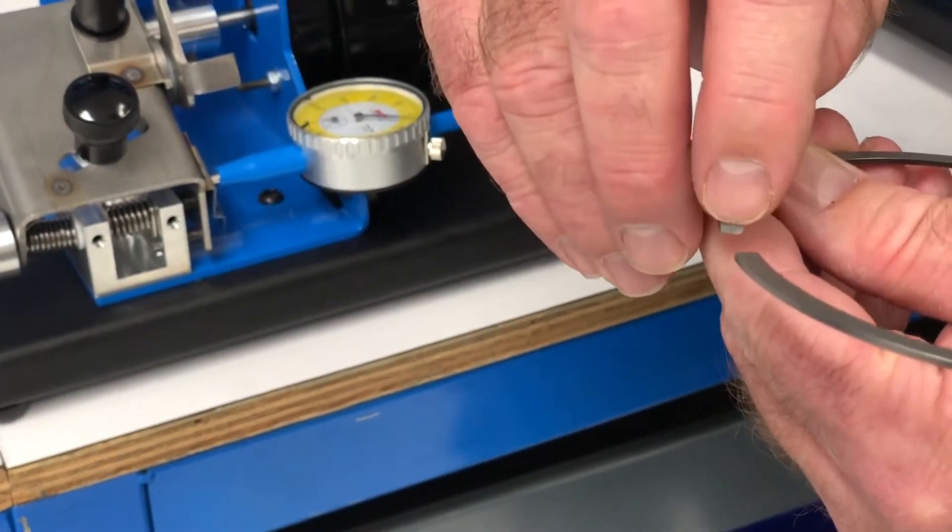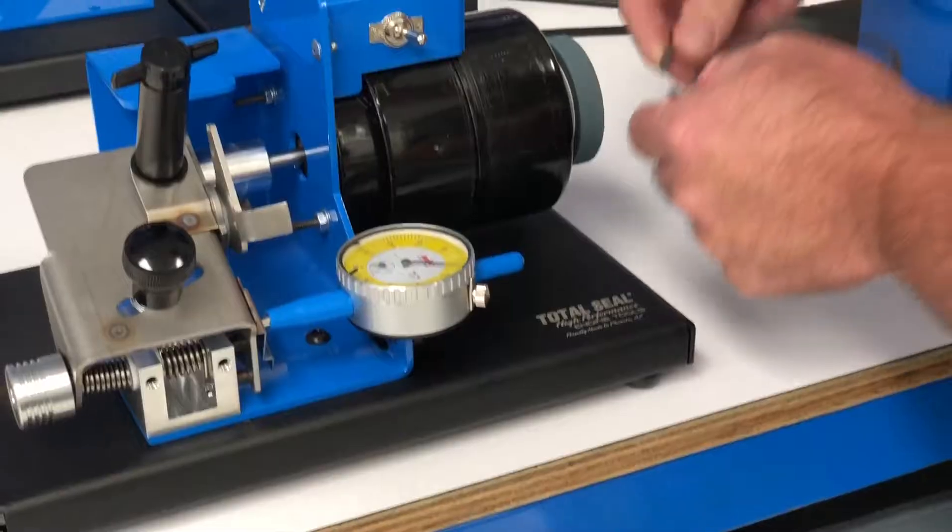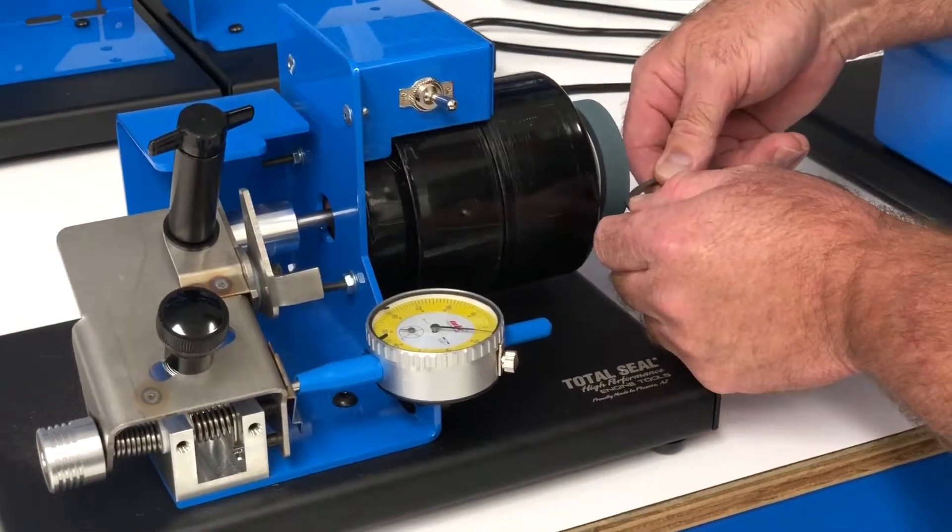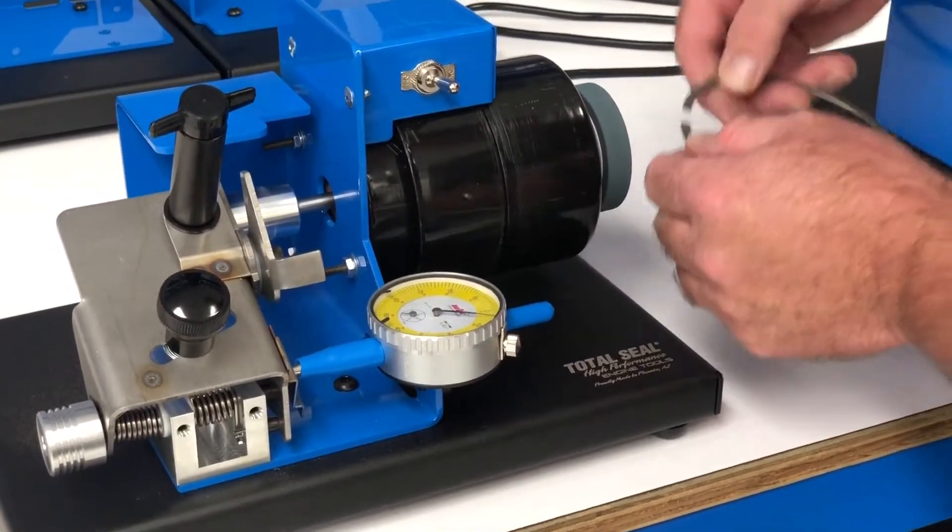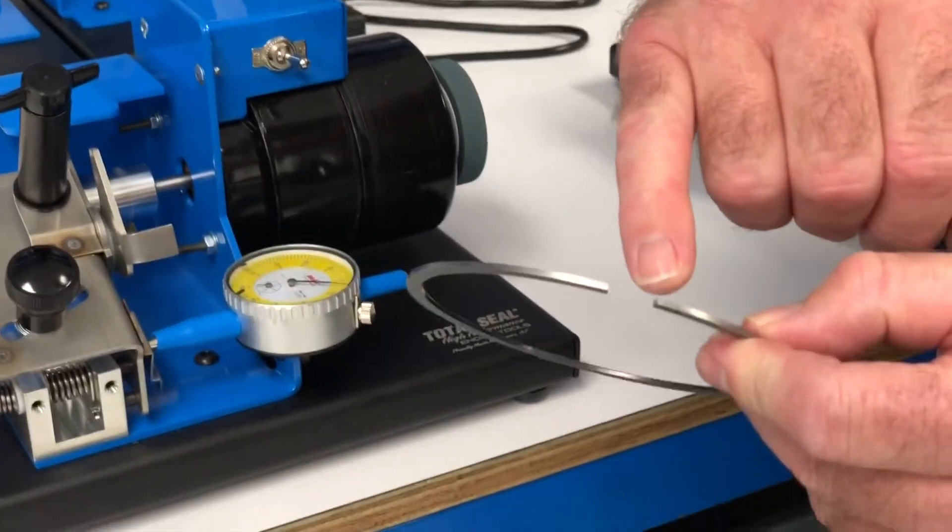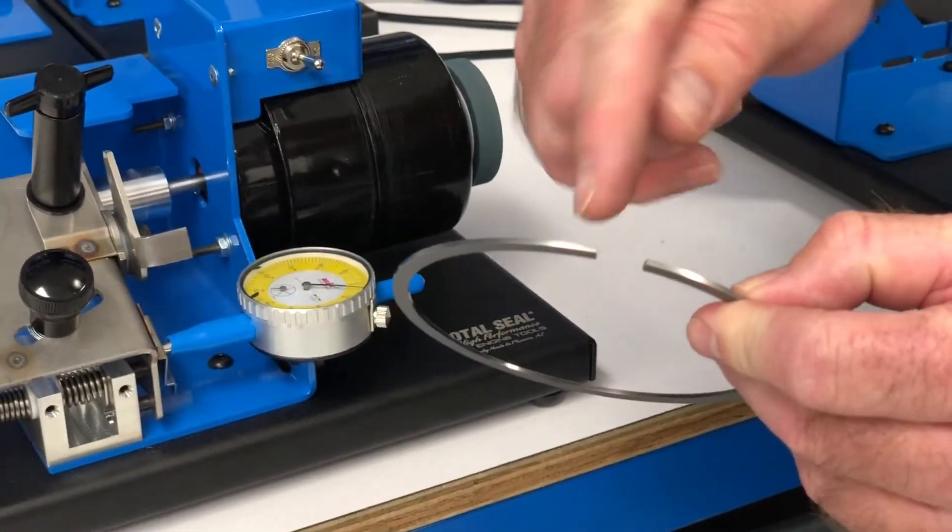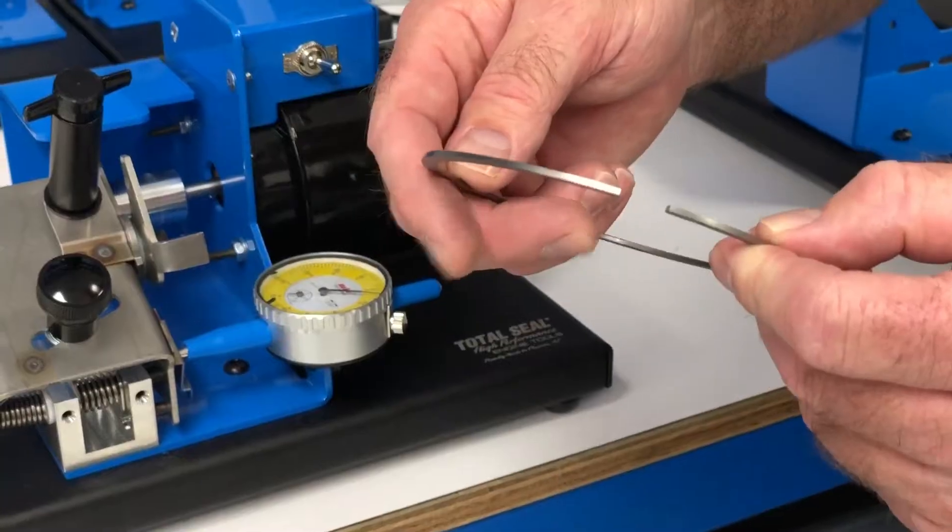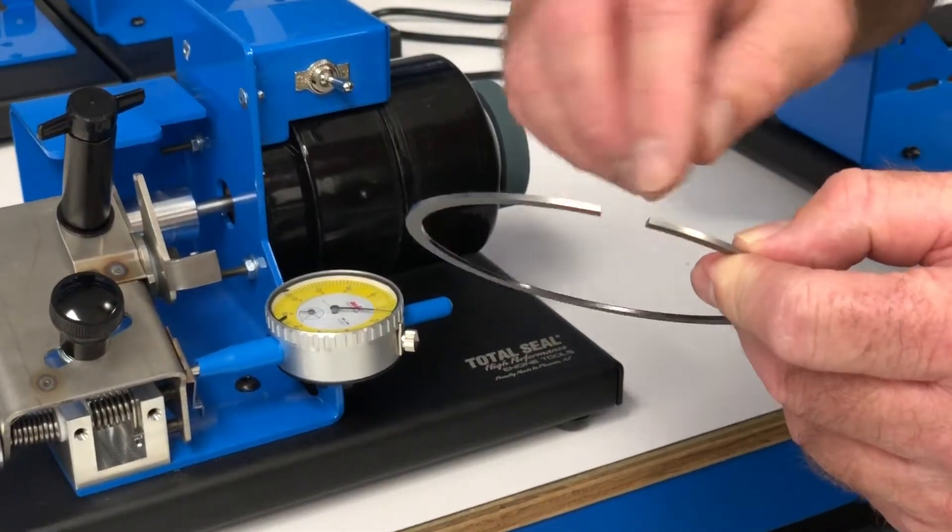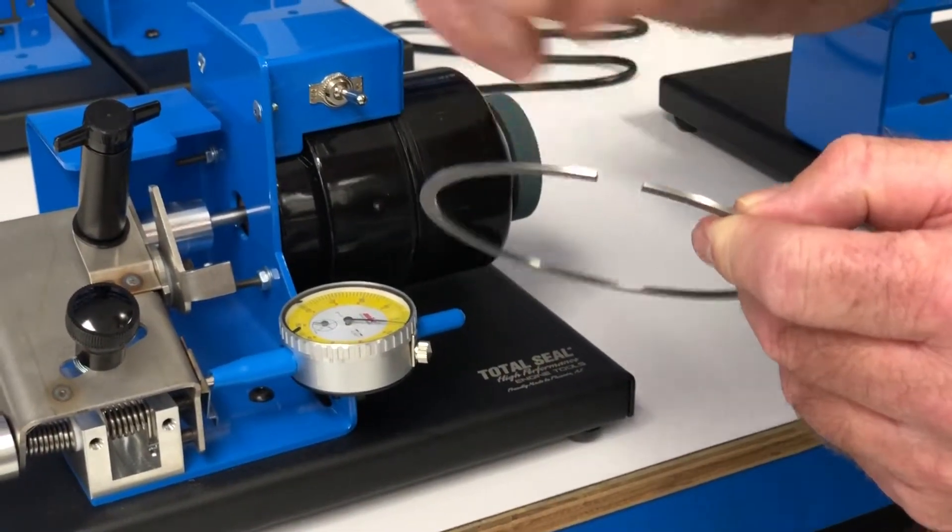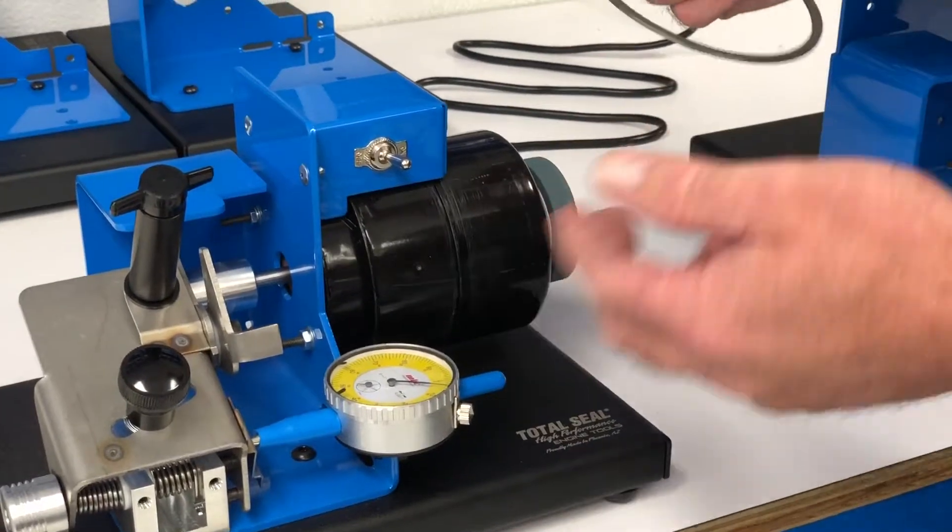This puts a slight radius on the edge of the ring. You're going to want to do that to the face of the ring. And once again real light. All you want to do is just break that edge of the ring. You never want to put a big radius on it because basically that's like adding end gap to the ring because you're taking away from the ring sealing area.